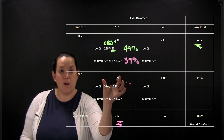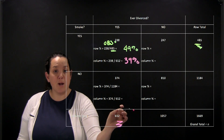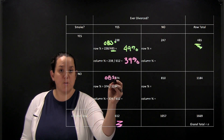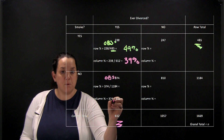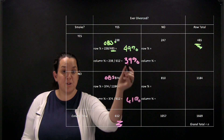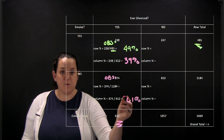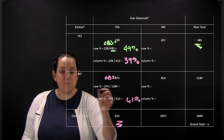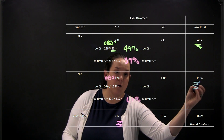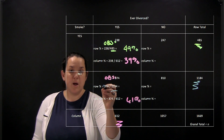Moving down to the cell for no smoker but yes having been divorced, we're still in the same column, so the denominator for the column percent stays at 612. Now the observed count is 374, so 374 divided by 612 gives a column percent of 61%. This column should add up to 100%, and indeed 39 plus 61 gives 100%. For this new row, the row total is 1184, so 374 divided by 1184 gives a row percent of 32%.